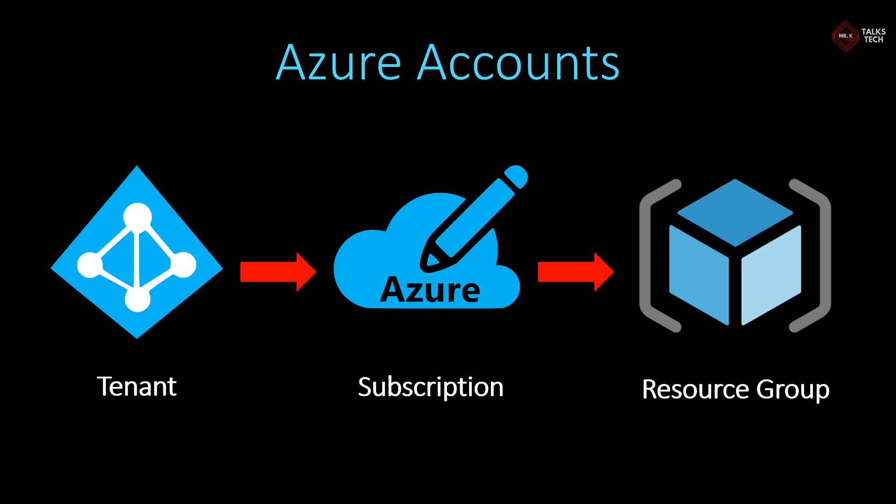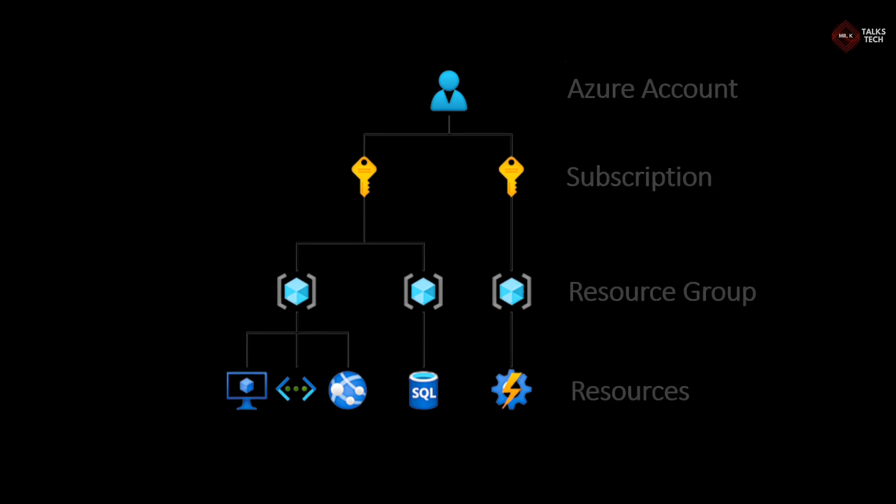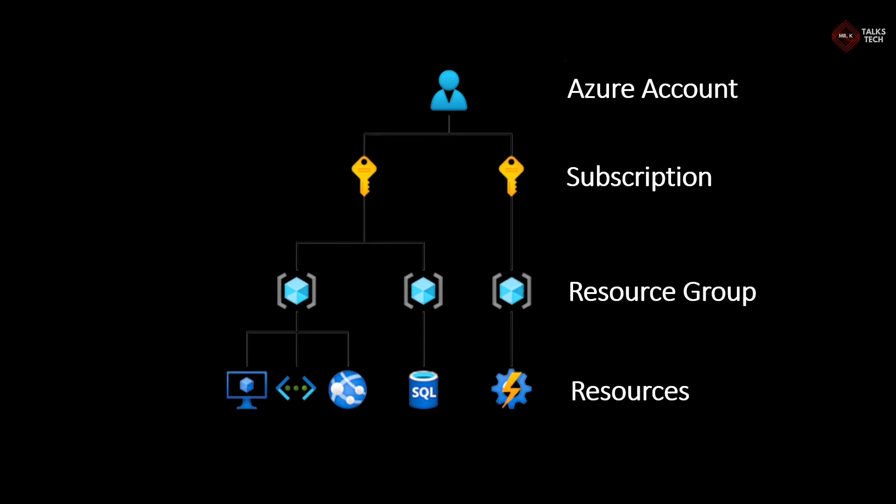In the next slide it will make more sense. Here you have one Azure account, and using one account you can create any number of subscriptions. We have two subscriptions shown, and inside one subscription you can create any number of resource groups. Once the resource group has been created, we can create any number of resources inside each resource group. This is the structure of the Azure account. In my next video, I'll be giving an Azure portal overview where we'll see how the tenant, subscription, and resource group look in the portal with a demo.